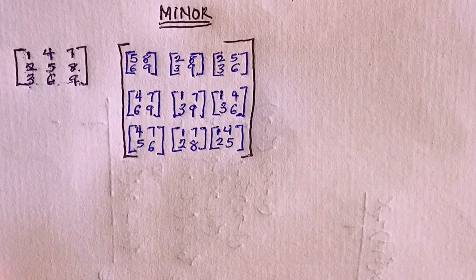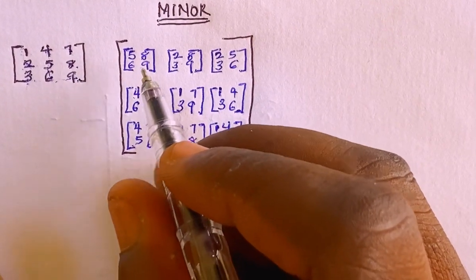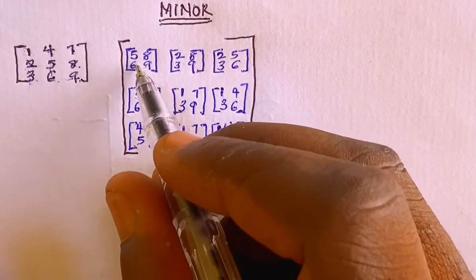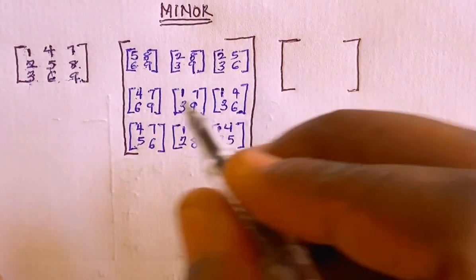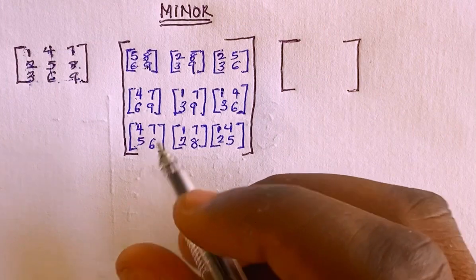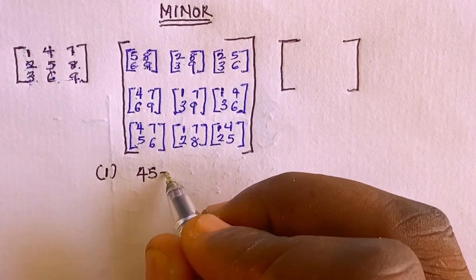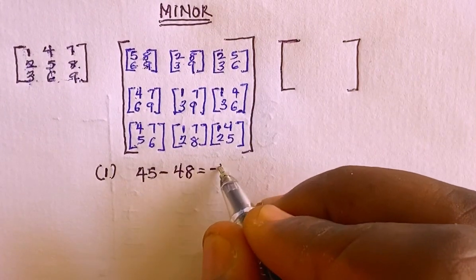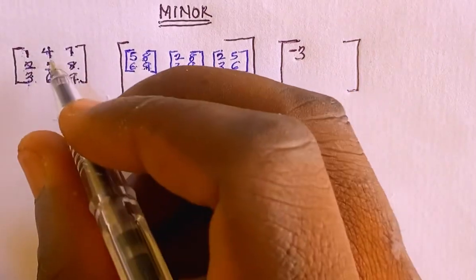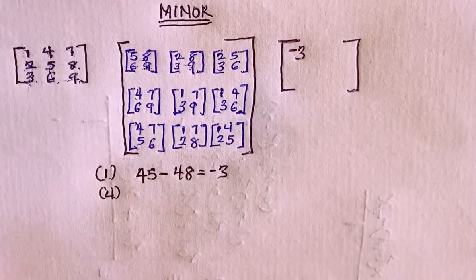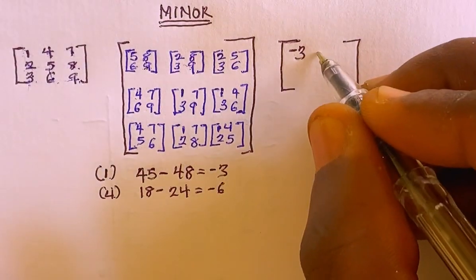Now for each of these boxes I'm going to solve it similarly to how I would solve a determinant — by computing the 2x2 determinant. For the first element 1, the sub-matrix is 5, 6, 8, 9, so that is 9 multiply by 5 which is 45, minus 6 multiply by 8 which is 48, giving minus 3. For element 4, the sub-matrix is 2, 3, 8, 9, so 9 multiply by 2 is 18, minus 3 multiply by 8 which is 24, giving minus 6.